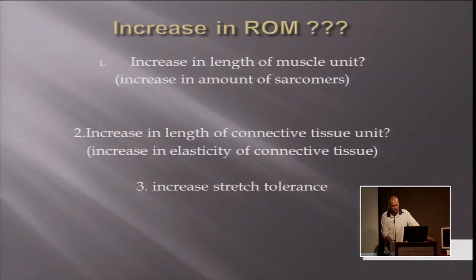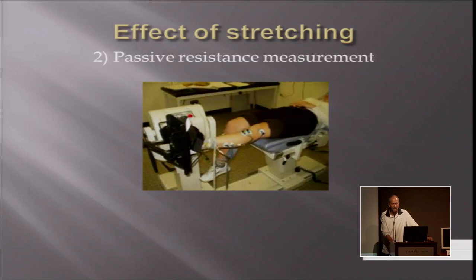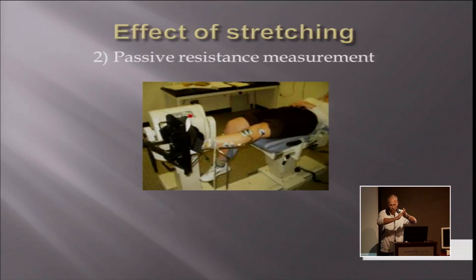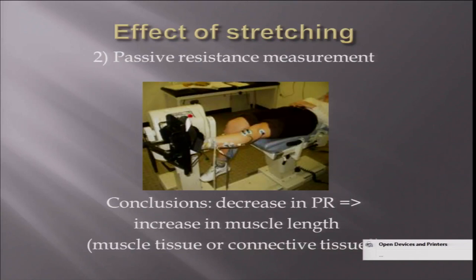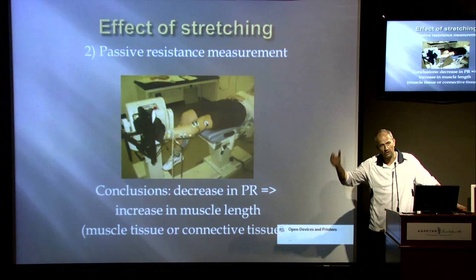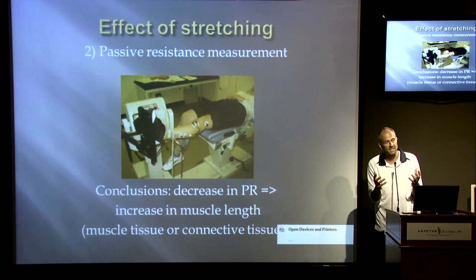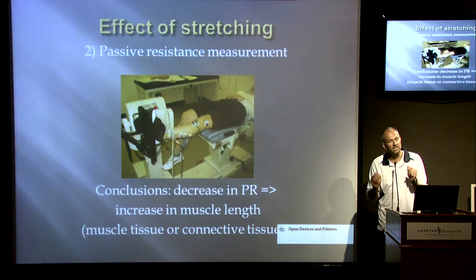If we only evaluate the range of motion, we cannot draw any conclusions except that the range of motion is increased. We need another parameter to examine, and that is the passive resistance measurement — which means that, with a device, you push the patient or subject through the whole range of motion and measure the amount of resistance until you reach a certain range of motion. You check with electrodes that the muscles are not contracted. Suppose you measure this before and after stretching, and you see a decrease in passive resistance — you know something has happened in the muscle or the tendon. Although at this stage you don't know whether it's the muscle or the tendon.